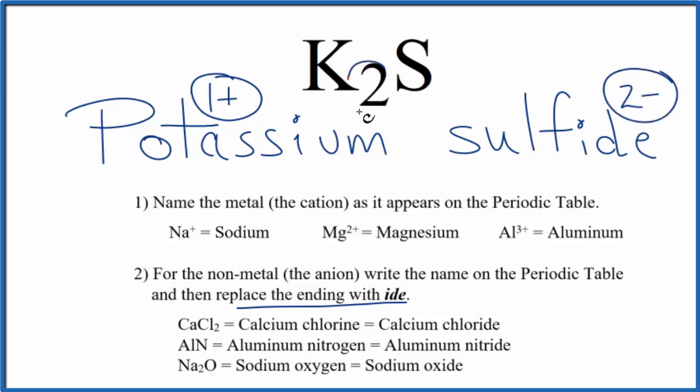So you can see why we need two of these 1 plus ions, potassium ions, to balance the charge on the sulfur.